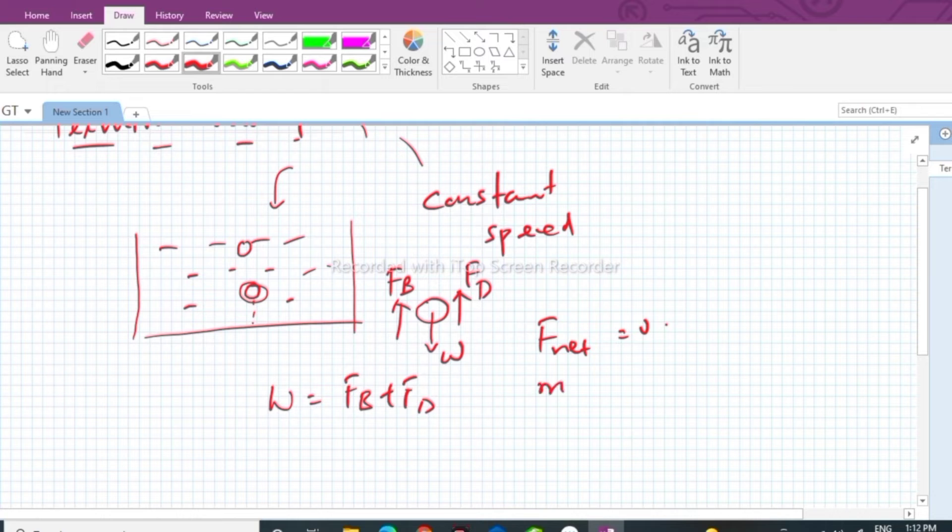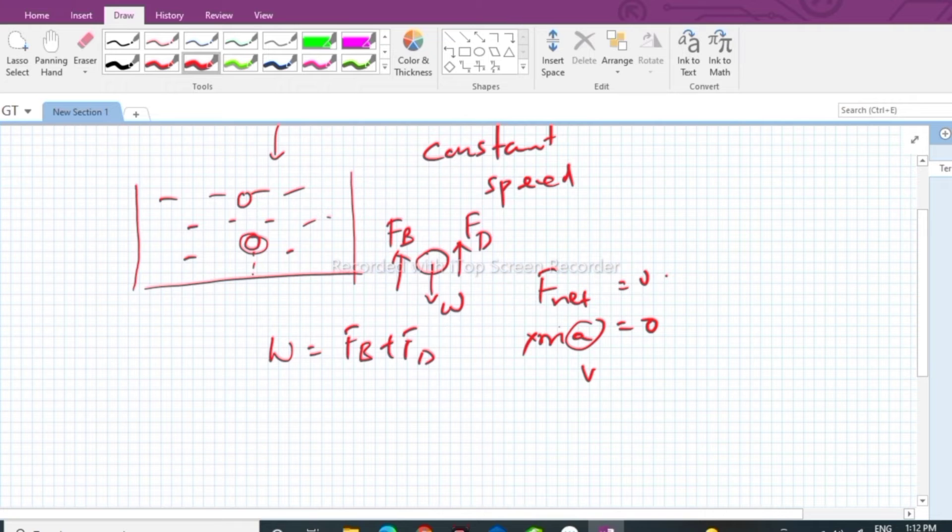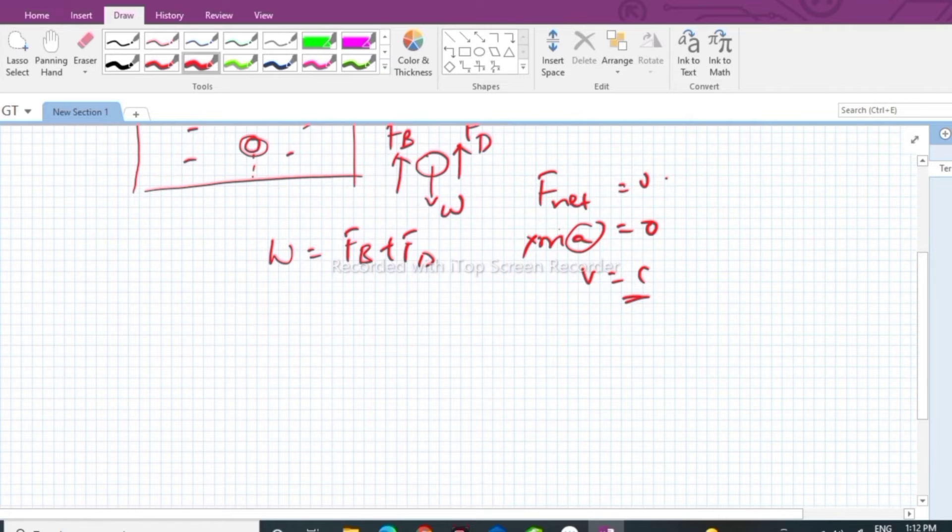If Fnet is equal to zero, what is Fnet? Mass into some acceleration is equal to zero. Mass cannot be equal to zero, so acceleration has to be zero. If acceleration is equal to zero, what is the condition? The velocity becomes constant. That is why the object is moving with constant speed. We need to just frame the equations.